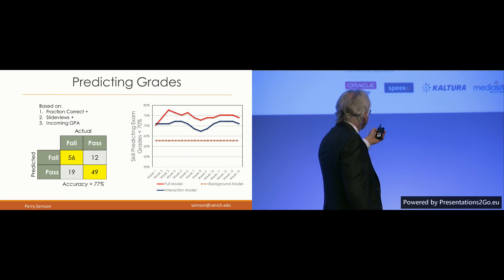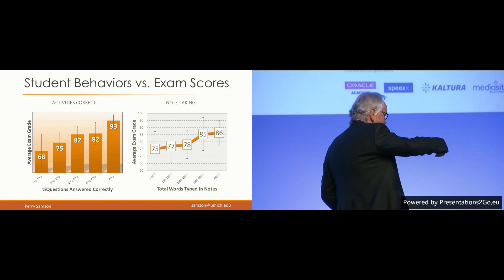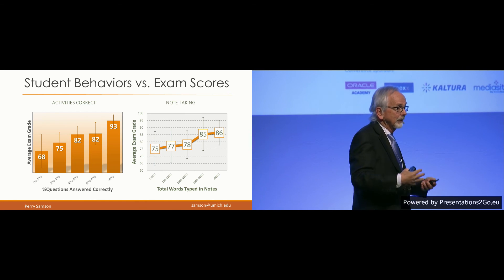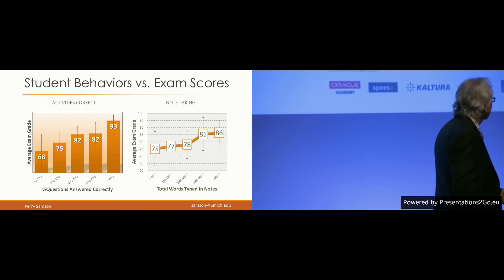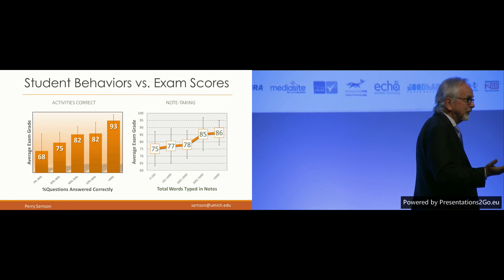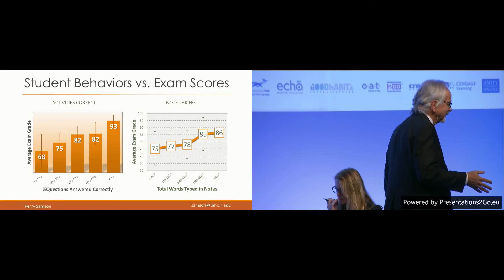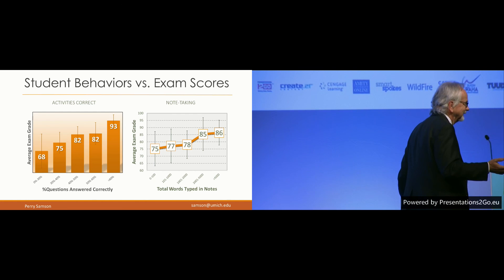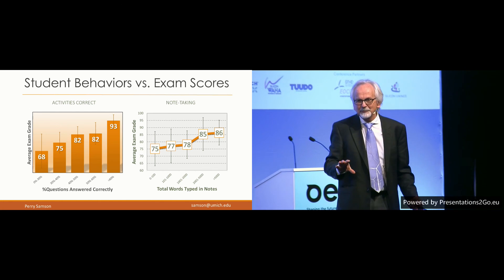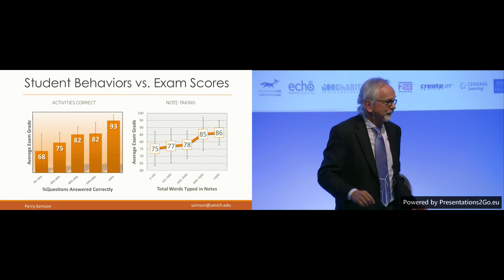I can see that the number of notes students take is related to grades. The number of questions they're getting correct during class is also strongly related to grades — if students are getting questions right during class, they're probably going to do well on the exam. So we should be collecting that data. Have formative assessment during class and get that feedback. You'll identify which students are in trouble very easily through that simple step.